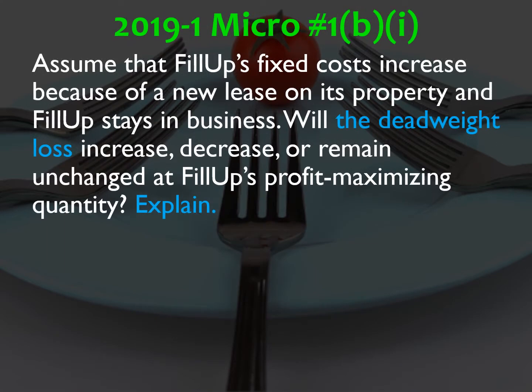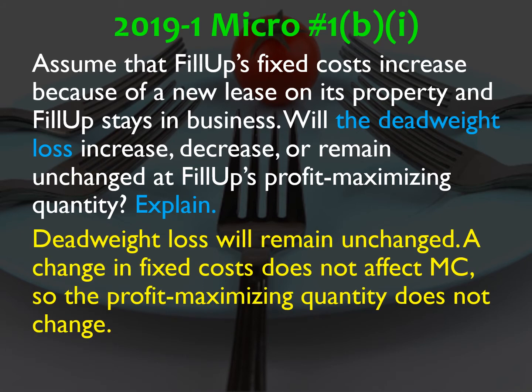Part B: assume that Phillip's fixed costs increased because of a new lease on its property and Phillip stays in business. Will the deadweight loss increase, decrease, or remain unchanged at Phillip's profit maximizing quantity? The deadweight loss is not going to change because a change in fixed costs doesn't affect marginal cost. Since marginal cost doesn't change and MR is still the same, the quantity at which MR equals MC doesn't change either. So there is no change in deadweight loss.